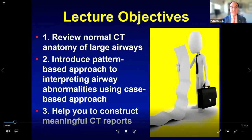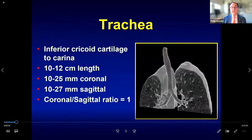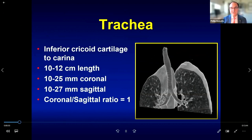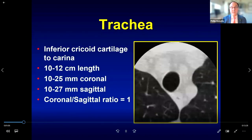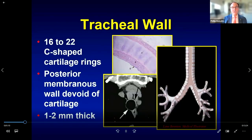Let's start with tracheal anatomy. The trachea extends from the inferior cricoid cartilage to the carina. There is wide variation in normal dimensions, but a helpful rule of thumb is that in normal healthy individuals the tracheal lumen has a one-to-one ratio of the coronal to sagittal diameter, meaning the shape of the trachea on inspiration is typically round or oval.